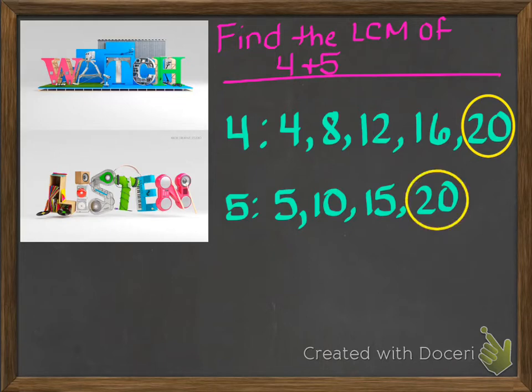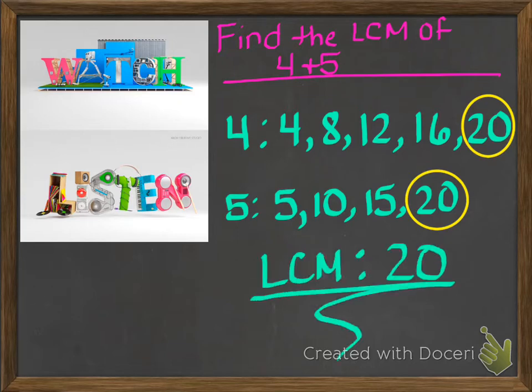Now, as soon as we found a number that they had in common, this is our least common multiple. The smallest number that you came across that they had in common is known as your LCM or your least common multiple. You can stop right there.